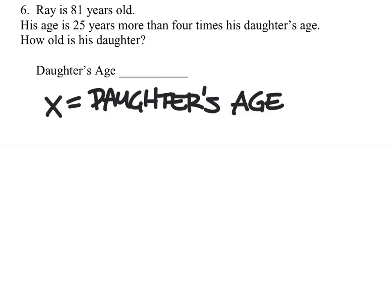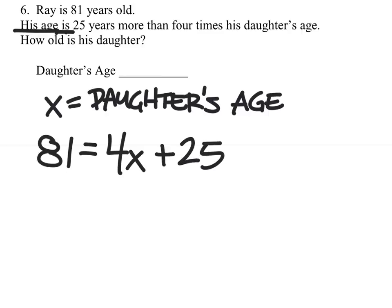So, in this equation, his age, which is 81, his age is, that's equal to, is 25 years more than four times his daughter's age. So, we have four times his daughter's age, but then we're going to take 25 years more than that. So, we're going to add 25 to it.